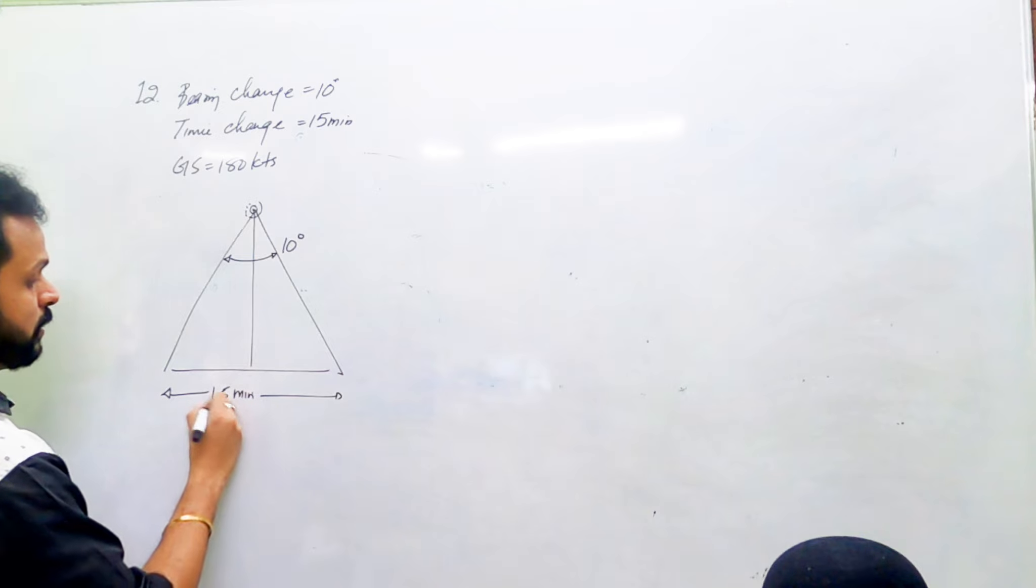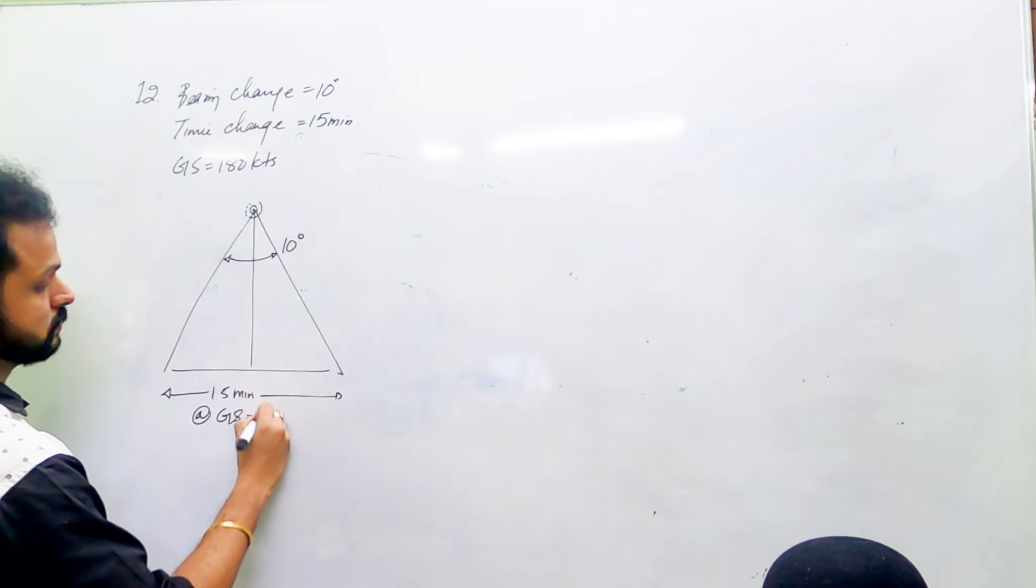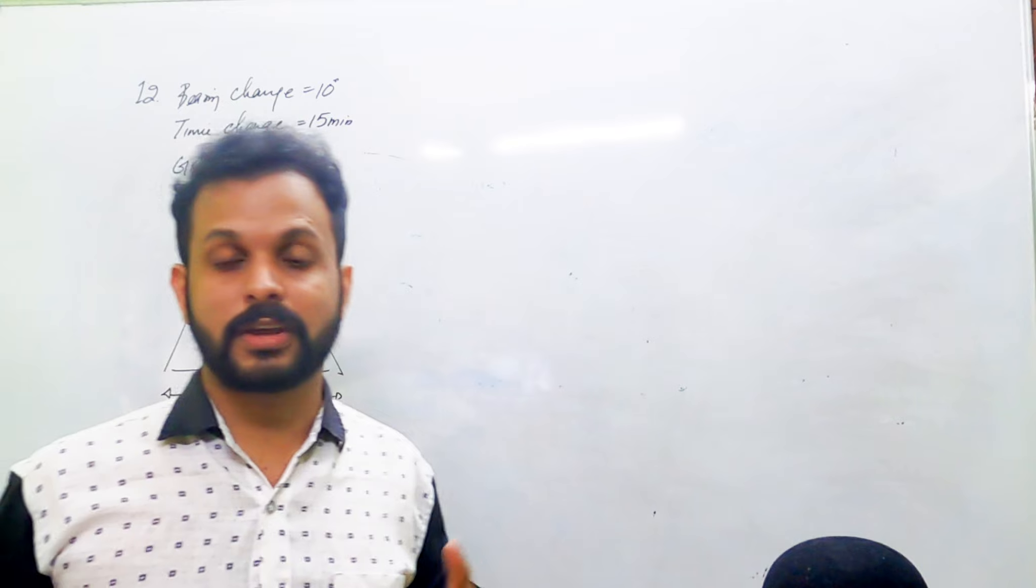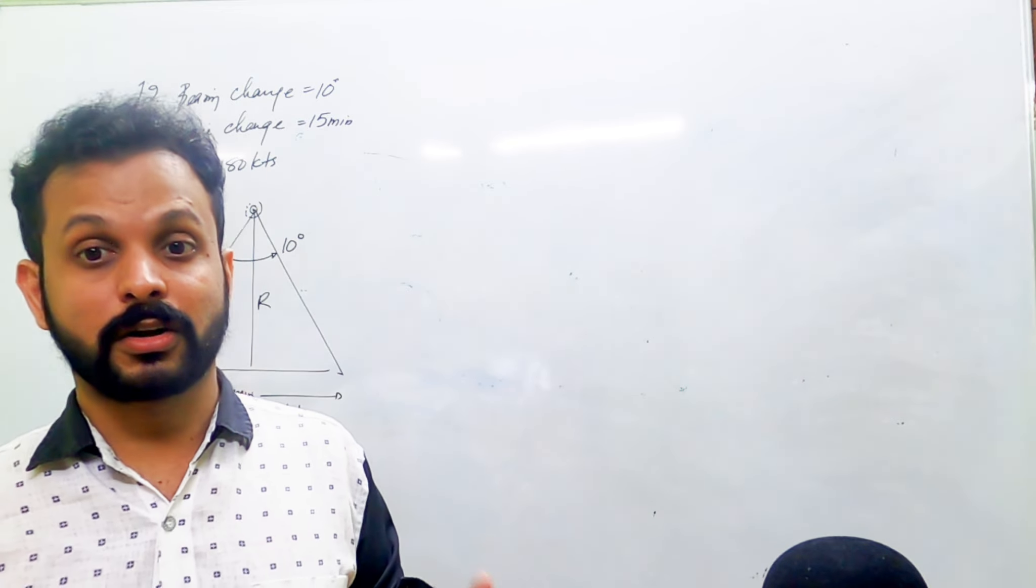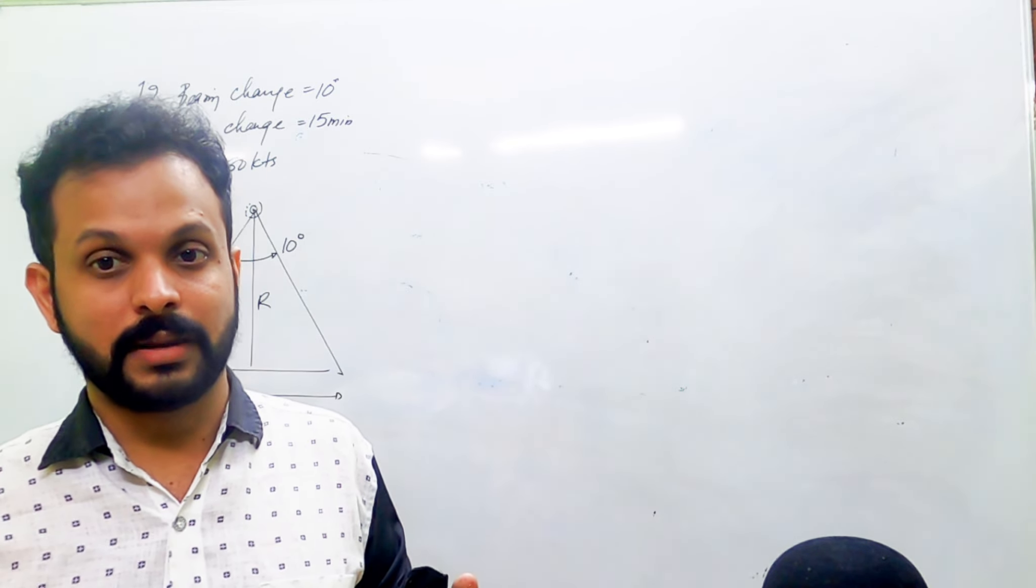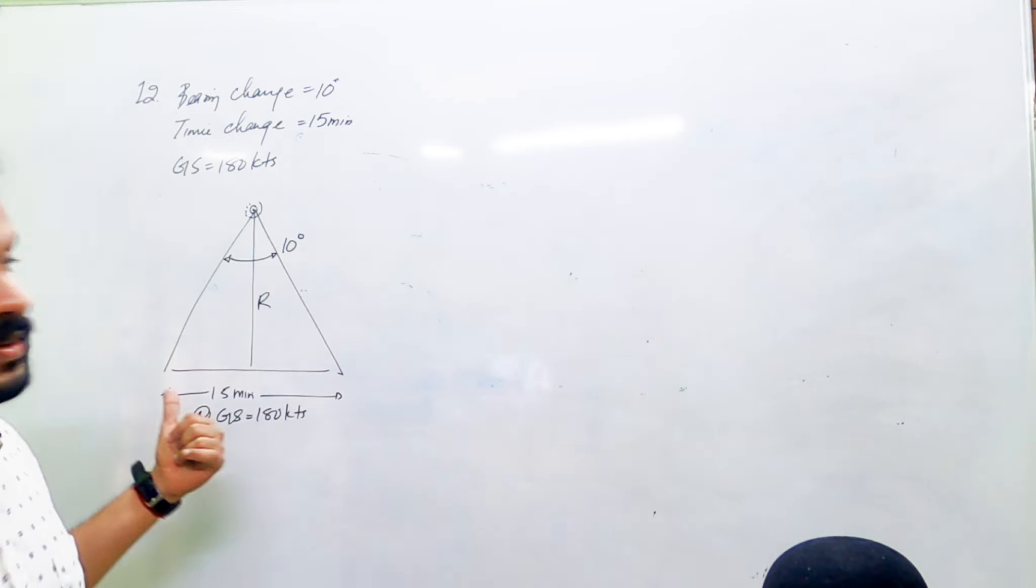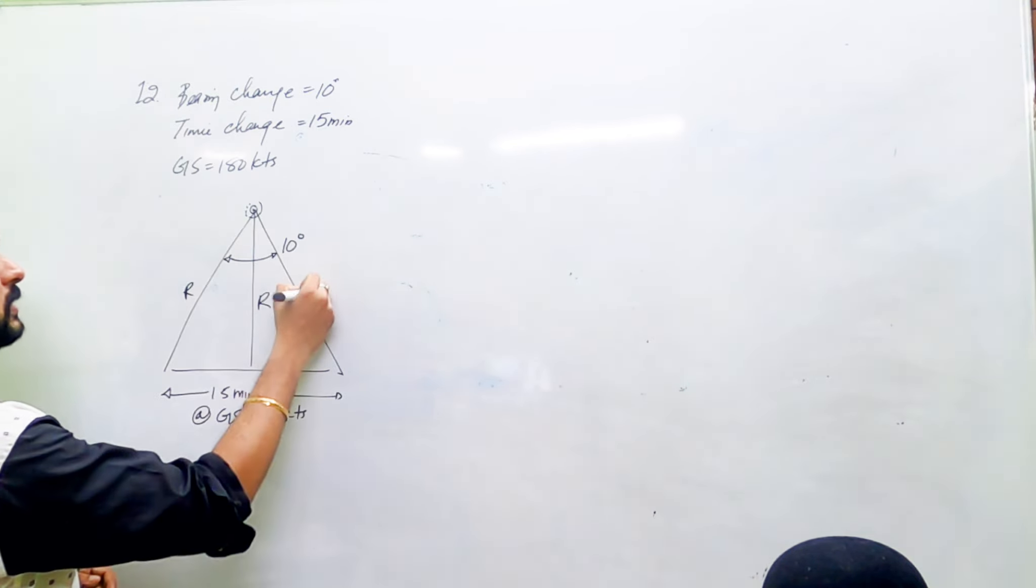At a ground speed of 180 knots, you're asked to find the distance, time, and fuel required. Basically, they're asking you to find the closest approach distance from the point of closest approach towards the navigation aid, as shown in the previous diagram.